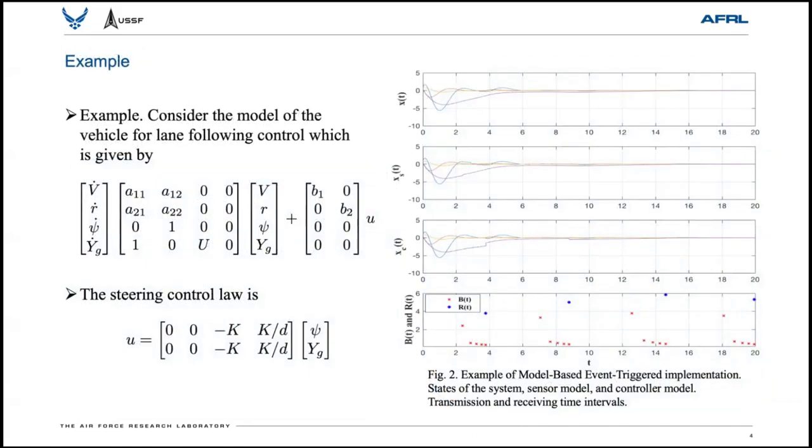We show an example. We consider the model of the vehicle for lane-following control, which is given by the first expression on the slide. The steering control law is given by the second expression, where psi and y can be used for event-triggered feedback. The values for different lowercase a's and b's in the state equation are uncertain and depend on the physical properties of the vehicle. The open-loop system is unstable and the aim is to stabilize it, that is, to converge to a lane and stay on it, using event-triggered feedback updates which are subject to packet loss.